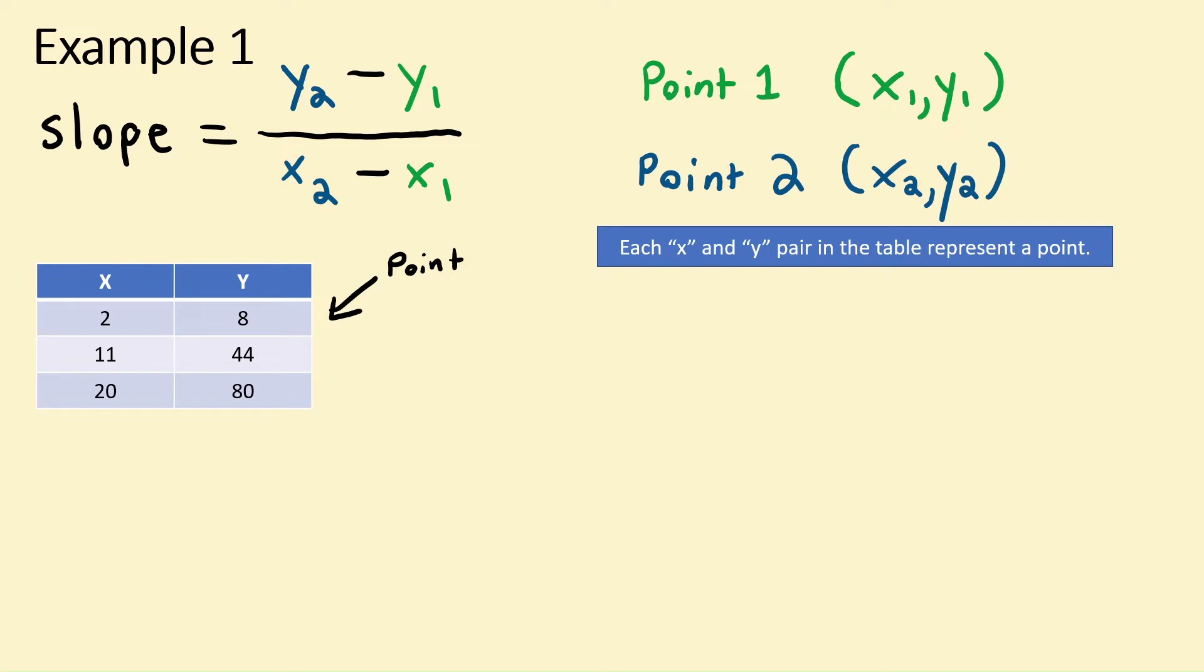Our first pair make up the point 2 comma 8. Our second pair make up the point 11 comma 44. And our third pair make up the point 20 comma 80.